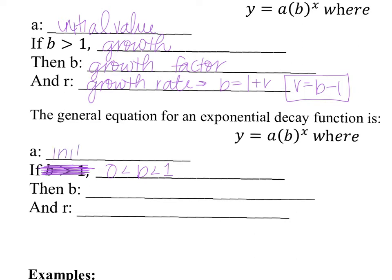a is still our initial value — it's still our y-intercept, that has not changed. But when our b is between 0 and 1, that is what we call decay. Just like the other one was growth factor, b in this case is the decay factor.